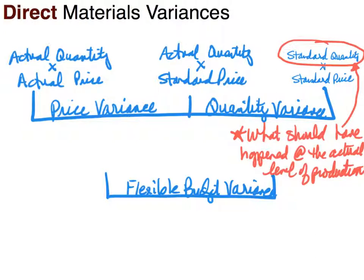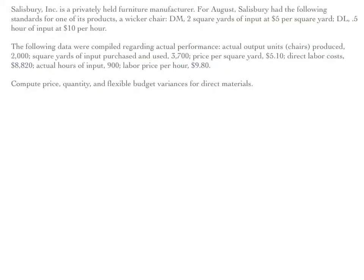To talk more about price variance, quantity variance, and the flexible budget variance, we'll use an example. Salisbury Inc. is a privately held furniture manufacturer. For August, standards for a wicker chair: direct materials are two square yards of input at $5 per square yard; direct labor is a half hour of input at $10 per hour. Actual data: output of 2,000 chairs produced, 3,700 square yards purchased and used at $5.10 per square yard, direct labor costs $8,820, actual hours 900, labor price $9.80 per hour. We need to compute price, quantity, and flexible budget variances for direct materials.